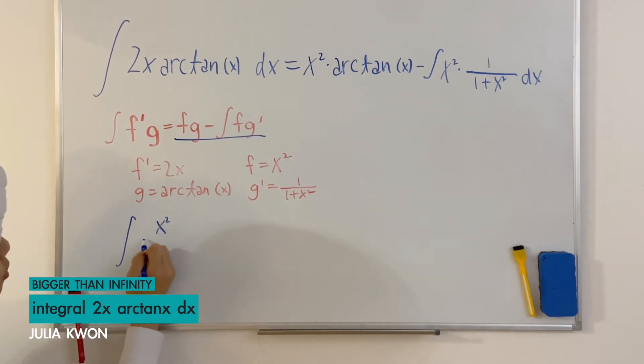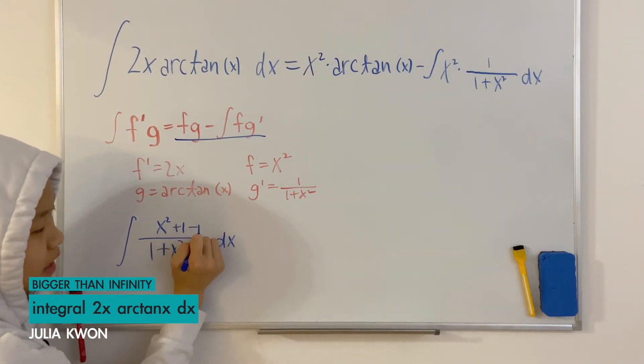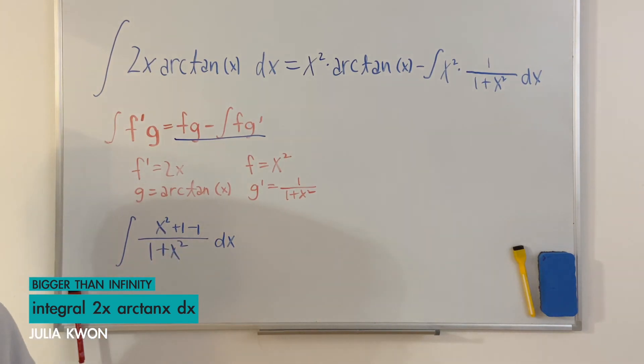We can just put the x squared on the top of the numerator and what I like to do is add 1 and subtract 1 in the numerator because it's basically like we did nothing and